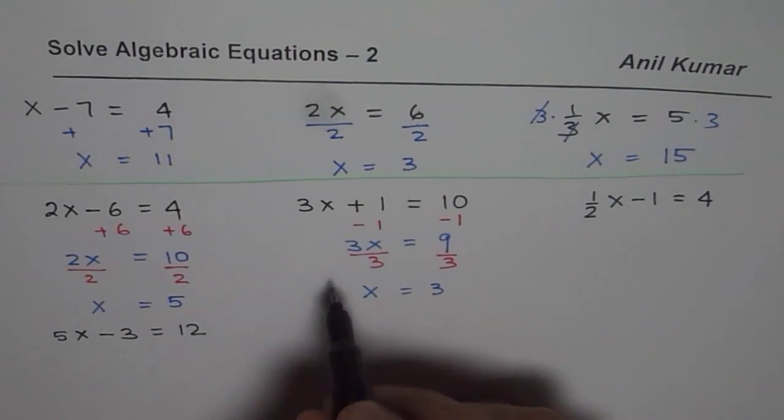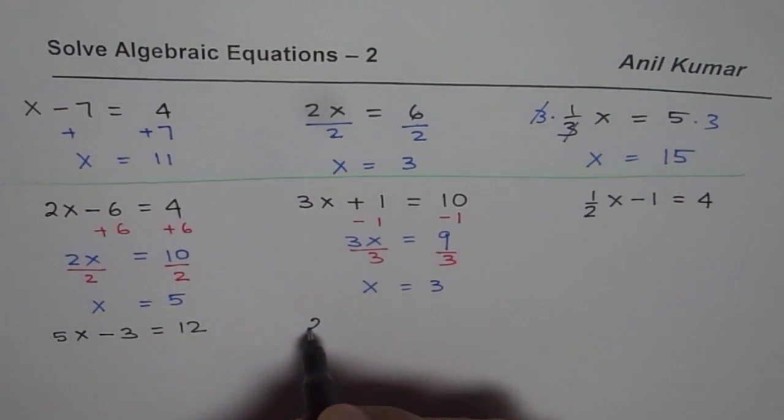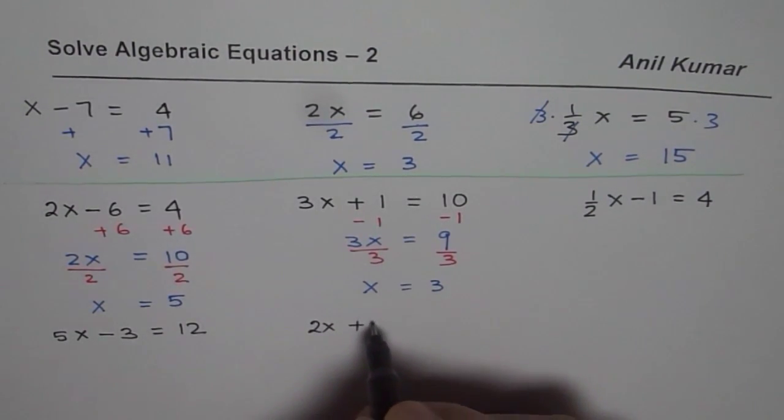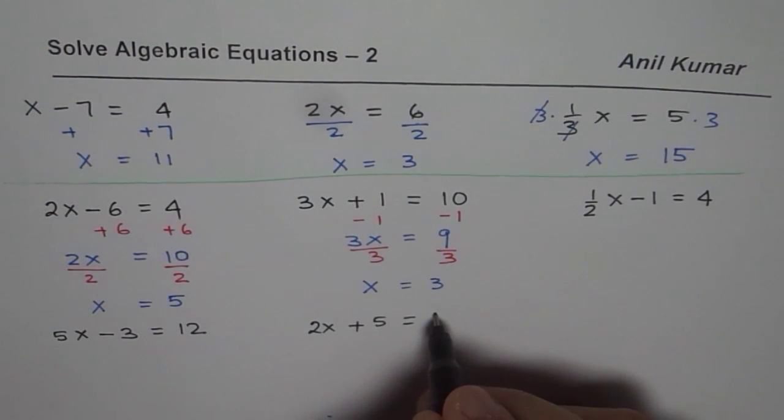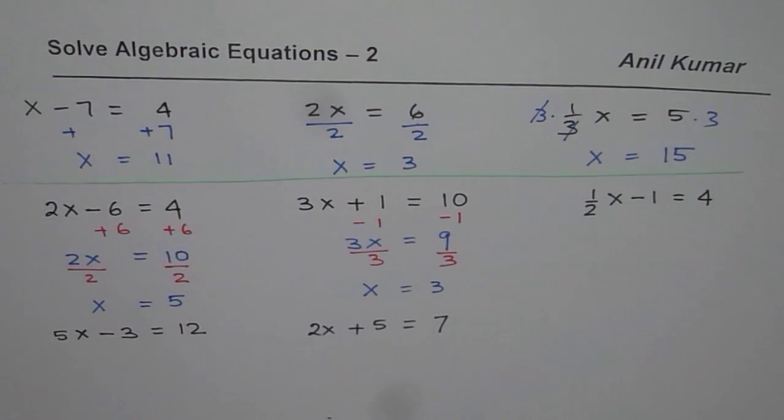Now let me give you one question here with a plus sign. We'll say 2x plus 5 equals, let's say, 7.